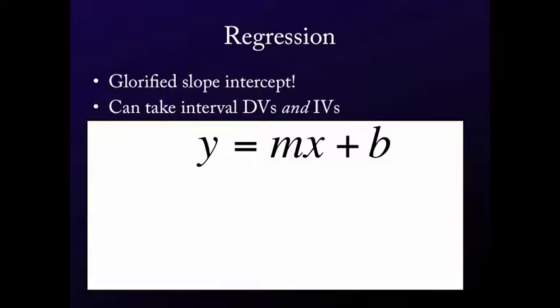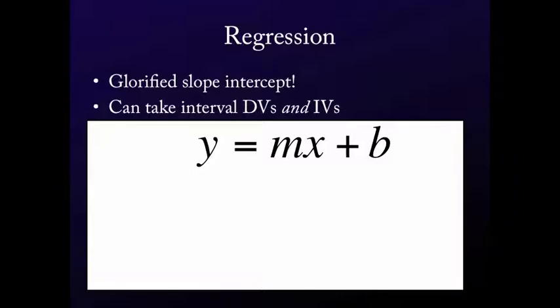But initially here, I just want to introduce it to you and show you how regression maps onto the slope-intercept equation. So this is a very simple slope-intercept equation above, and this is a very simple regression equation below, which is one independent variable. And you'll notice that the equation has the exact same structure.